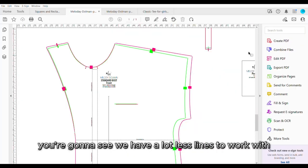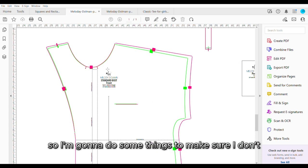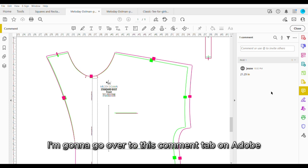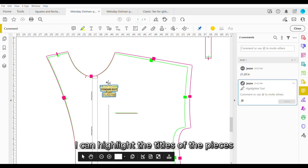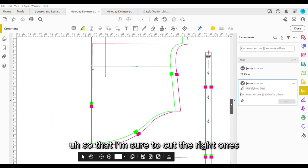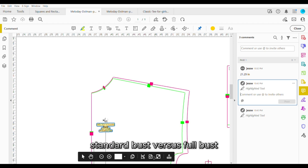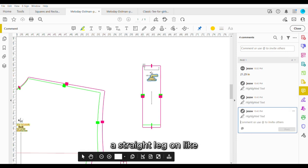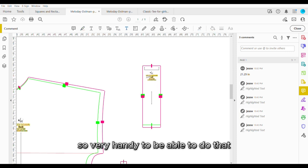Now over in Adobe, you're going to see we have a lot less lines to work with, but I want to make sure I cut the right pieces out. So I'm going to do some things to make sure I don't cut incorrectly. I'm going to go over to this comment tab on Adobe, and this is going to give me several different options for marking patterns. I can highlight the titles of the pieces so that I'm sure to cut the right ones. Comes in very handy if you need to cut standard bust versus full bust.